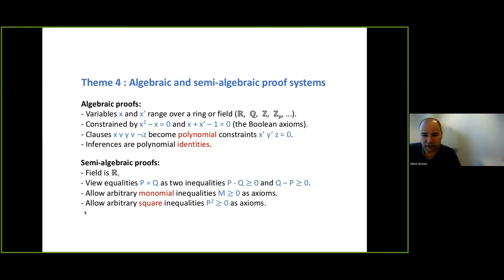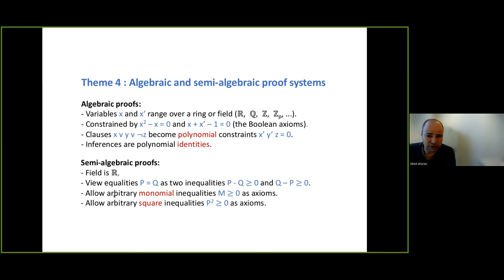Different semi-algebraic proof systems arise depending on what non-negative terms you allow. In the sum-of-squares proof system, you allow squares and sums of squares. In the sum-of-monomials proof system, you allow monomials and their sums. A refutation is a polynomial identity showing minus one can be derived from the clauses — proving unsatisfiability. We measure degree (like width for resolution) and monomial size (counting monomials in the components of the proof, not in the simplified final expression). These give two different complexity measures.